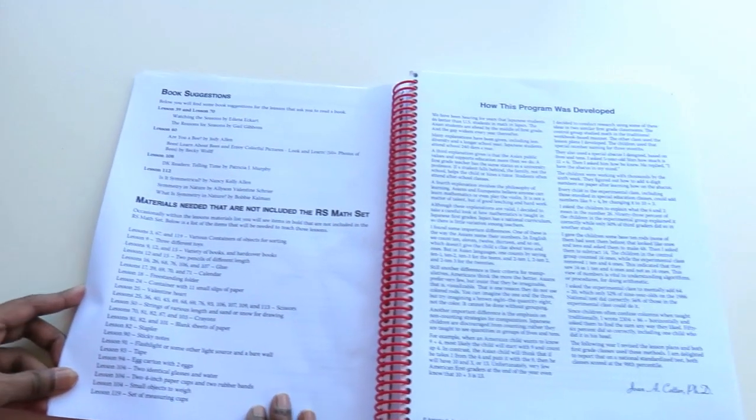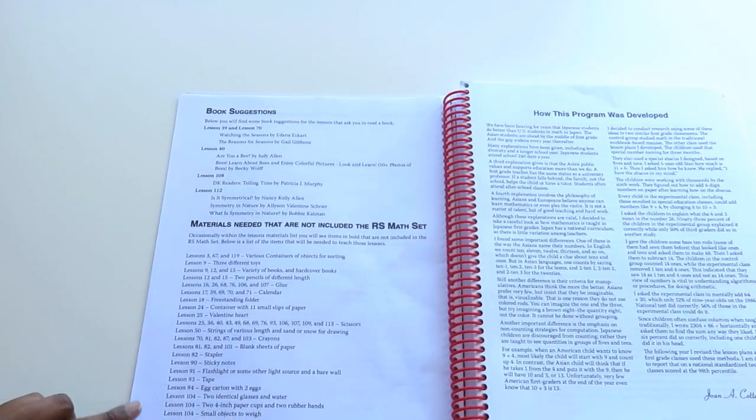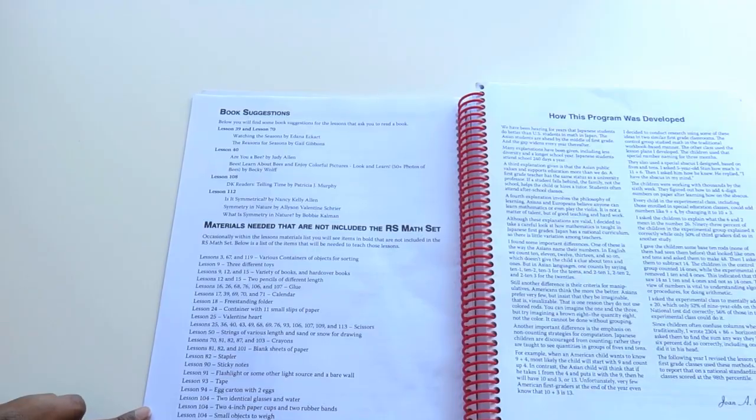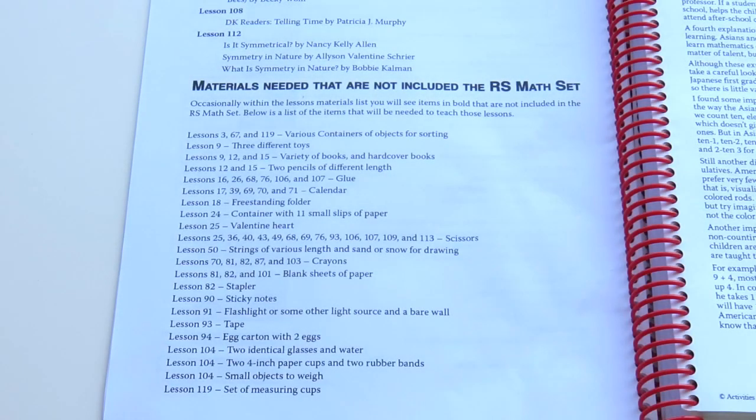Next there is some suggested reading in terms of children's books that you can read with your kiddo that'll help them become familiar with the ideas as they do the lessons. Here you have a list of materials that you need that are not included in the program which you should be able to find around your house - things like tape, a stapler, measuring cups, and random things you can weigh.